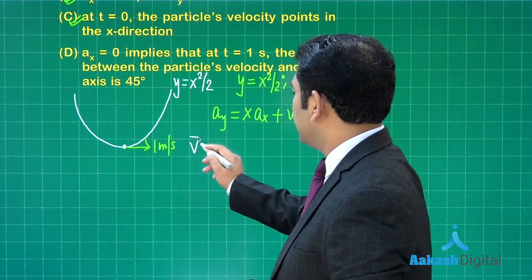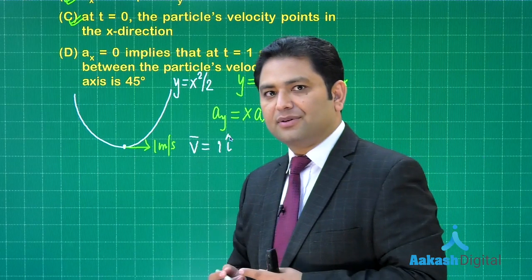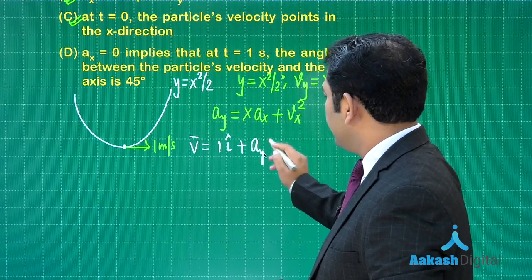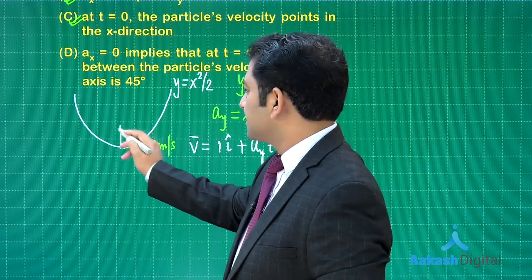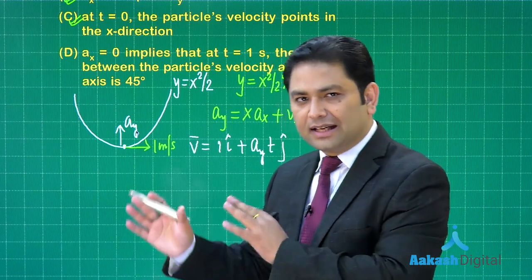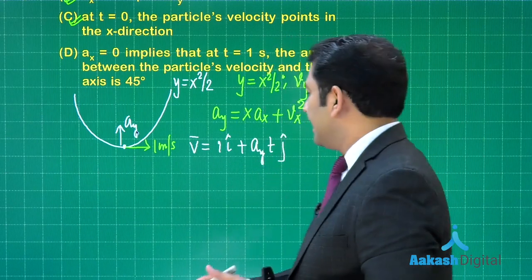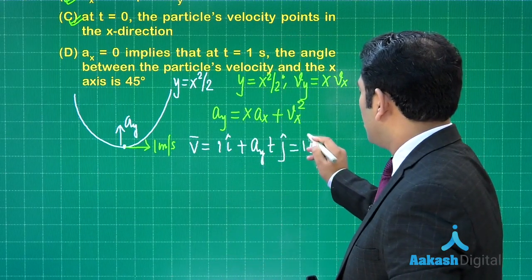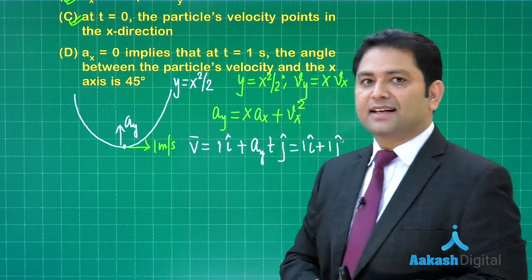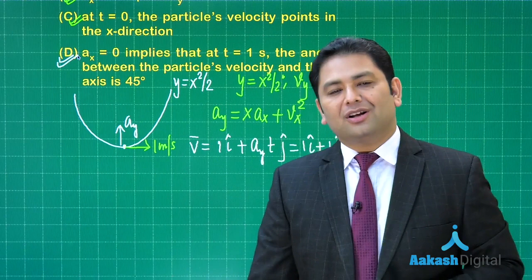Because the velocity along x and y: the x velocity will remain the same since ax is zero, and the y velocity is ay times t times j cap. Remember, the acceleration along y has to be upward because the curve is this way. How much is ay? That's given as 1, and at one second this is 1 j cap. So it's clear the velocity makes an angle 45 degrees with the x axis. So A, B, C, D all are correct.